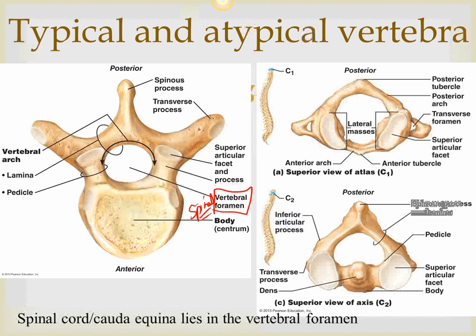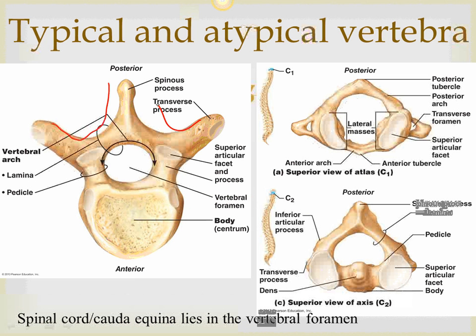The spinal cord does not end at the coccyx — it ends at the lumbar region. From there, there is a sheath of nerve fibers called the cauda equina, which looks like a horse's tail. Spina bifida is a condition where the spinous process is not formed properly — the lamina and spine have not fused, leaving the canal open so the spinal cord can bulge out. There are different degrees of spina bifida.